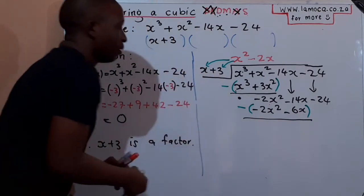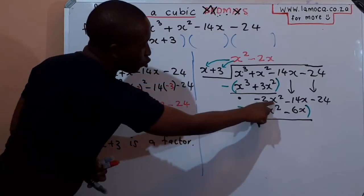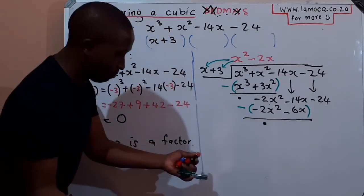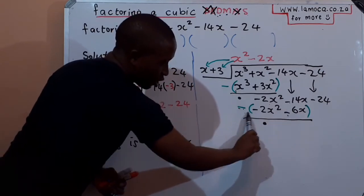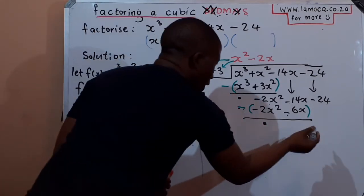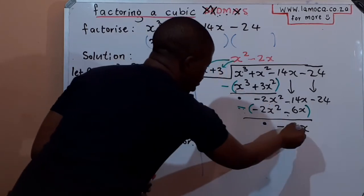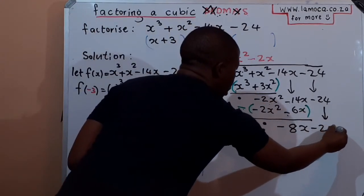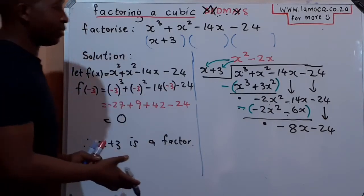Now subtract the second cycle: −2x² − (−2x²) = 0, and −14x − (−6x) gives −14x + 6x = −8x. Remember, a negative of a negative is a positive. Bring down −24 to sit alongside the −8x.